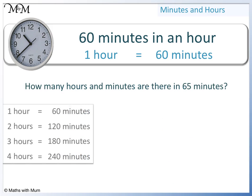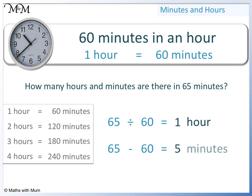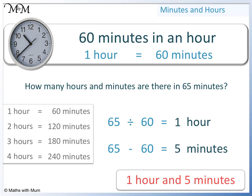How many hours and minutes are there in 65 minutes? 1 hour equals 60 minutes, so to find the number of hours, we see how many times 60 goes into 65. 65 divided by 60 equals 1, so 1 hour. We will also have a remainder, so we subtract 1 hour, which is 60 minutes, from 65. The remainder is 5, so 5 minutes. 65 minutes is the same as 1 hour and 5 minutes.